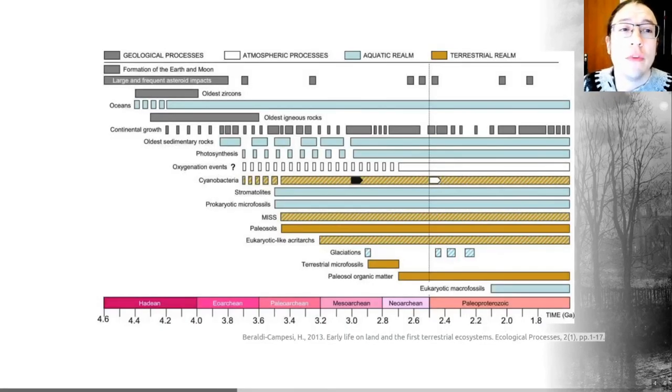To conclude, unicellular organisms formed a biomass-rich cover with mature soils from relatively early on, earlier than we may think in Earth's history. These were the same environments that ultimately plant-dominated ecosystems would later evolve. All of that is nicely summed up by this diagram from a Beraldi-Campesi paper in 2013.